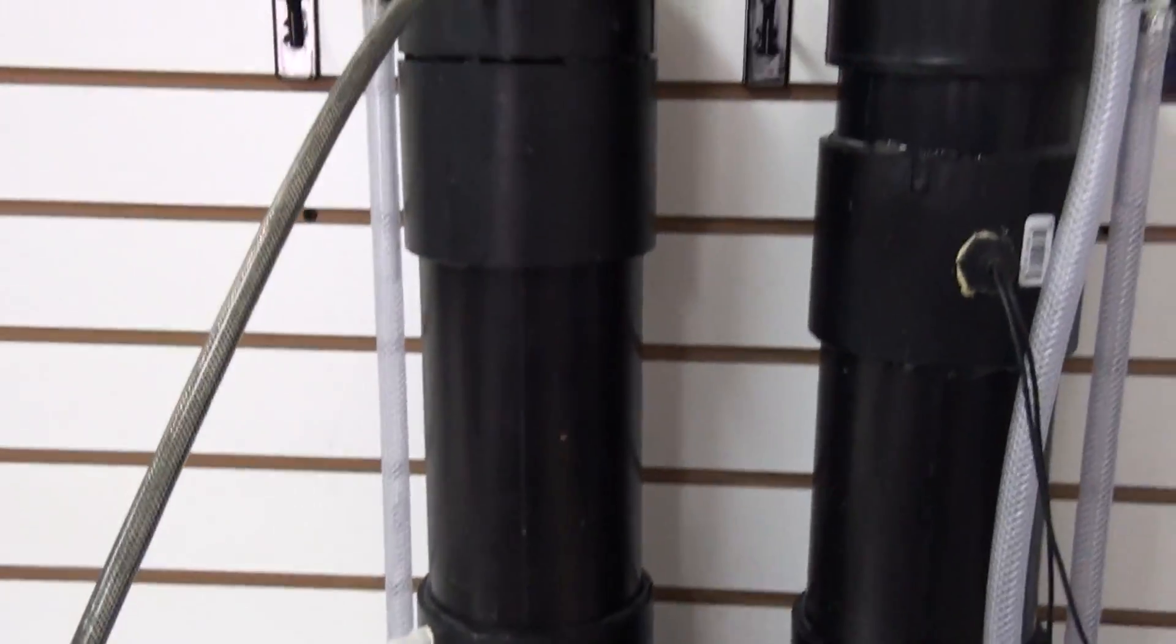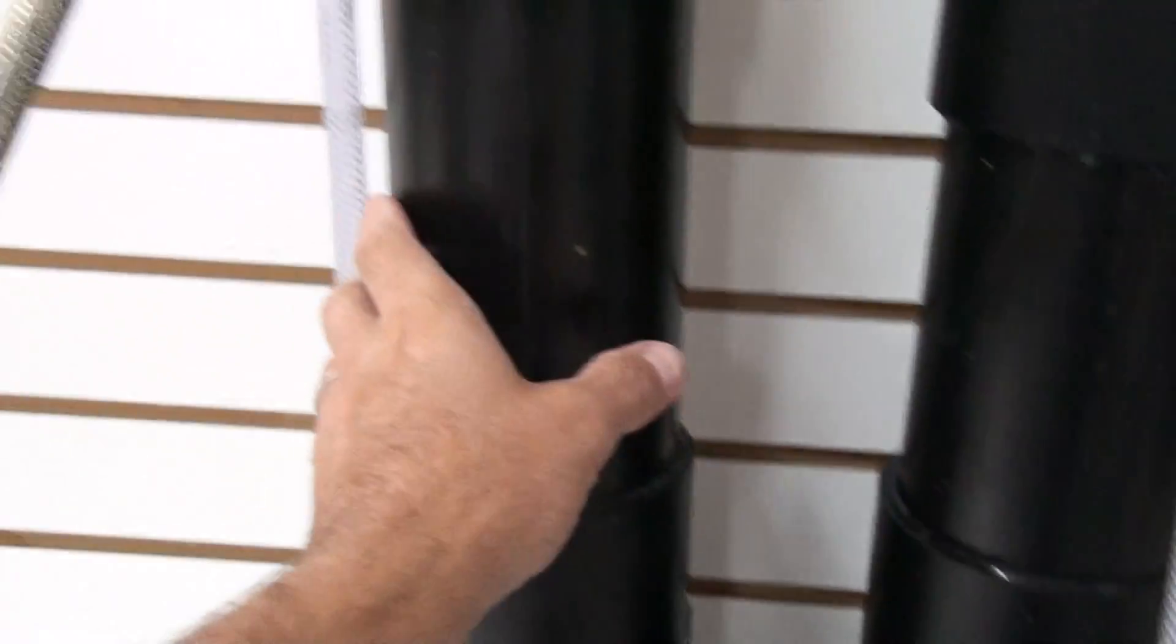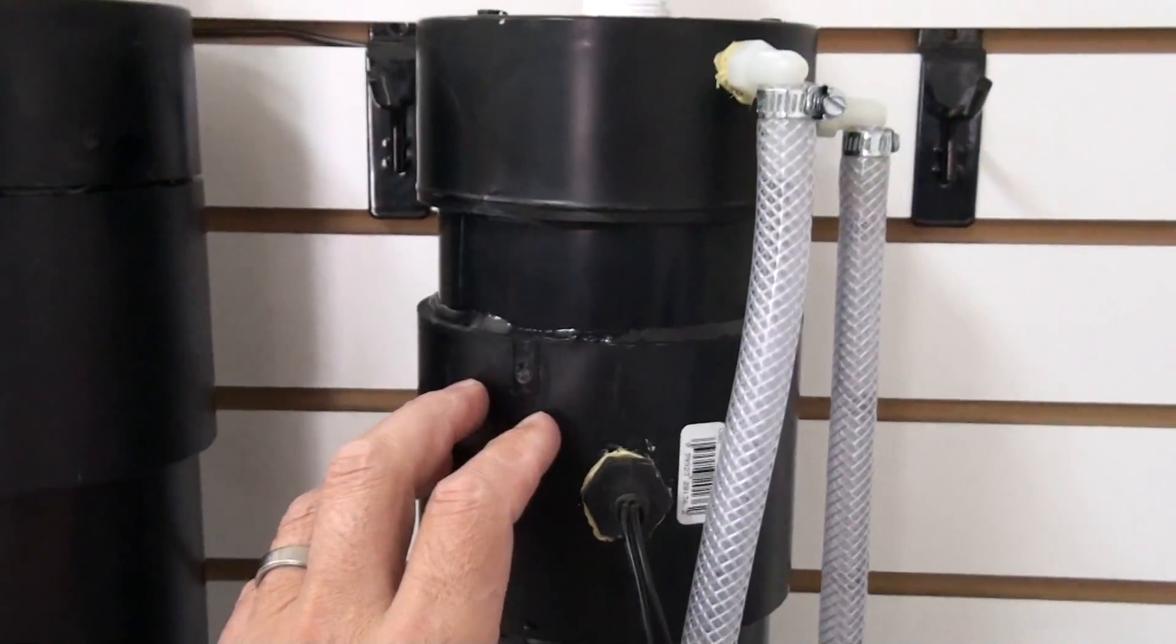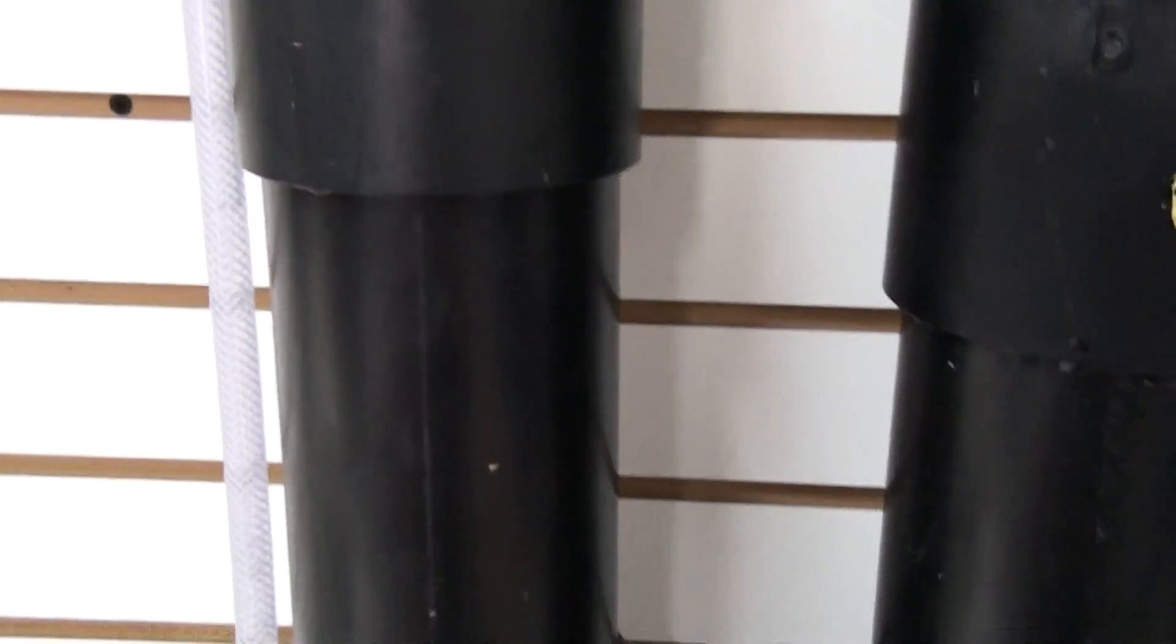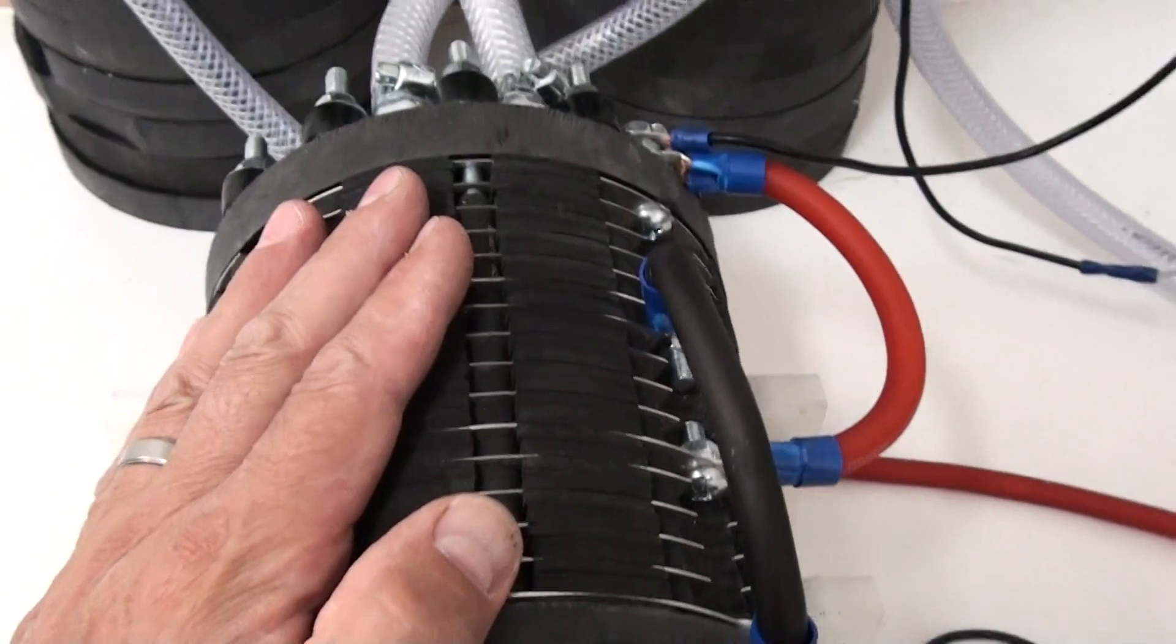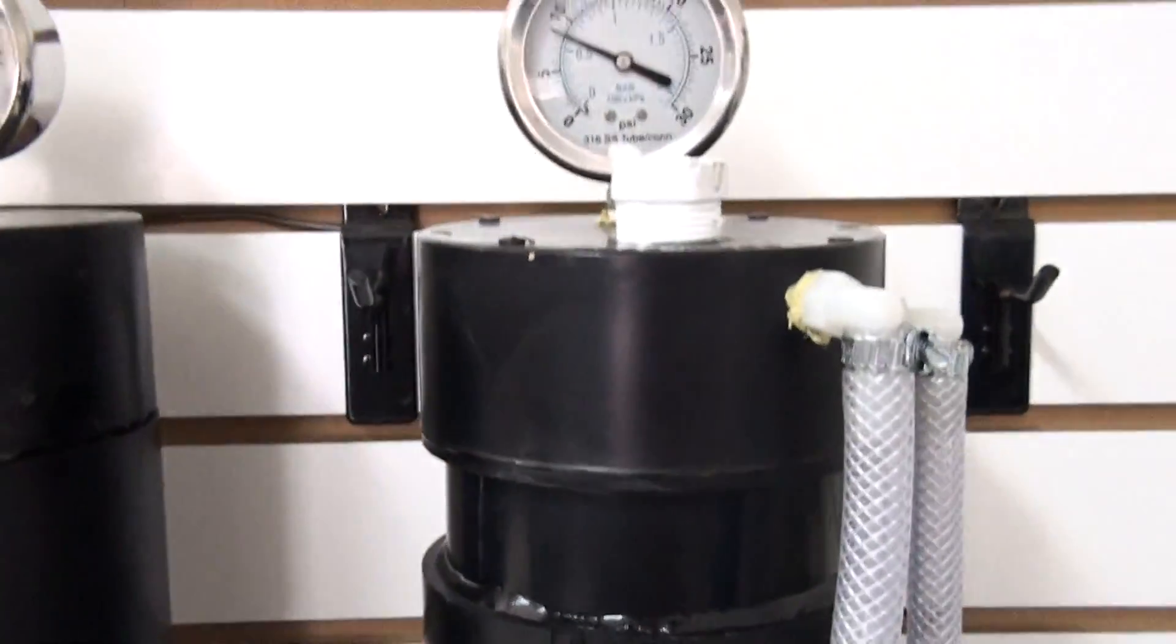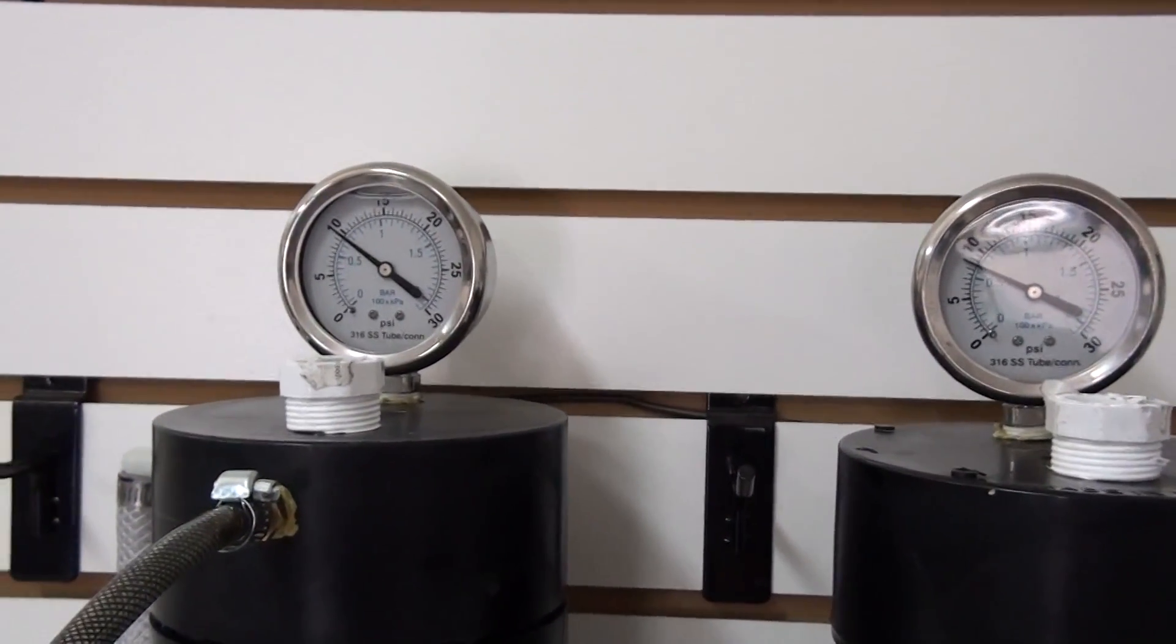Right here we've got our tanks. These tanks are made out of ABS. This is the hydrogen tank. This is the oxygen tank. The reason why I did this in this kind of tank is so that it will hold some pressure. This hydrotube here will go up to about between 25 and 30 psi.